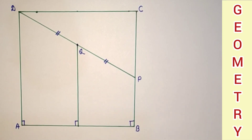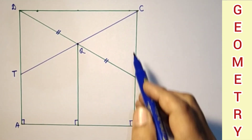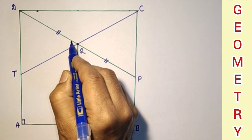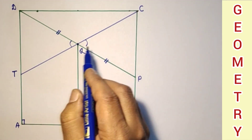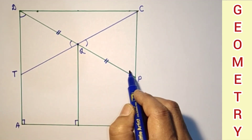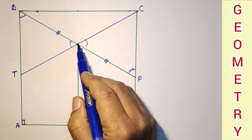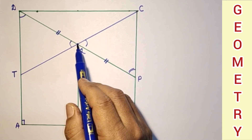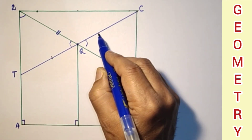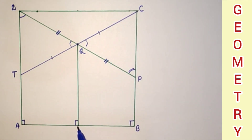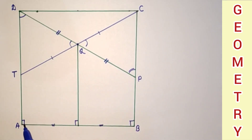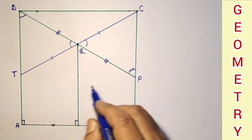If we do it in another way — second method — if we extend CQ and let it intersect side AD at point T, then the diagram will look like this: the line is extended up to T. These two angles are equal as vertically opposite angles. This angle equals this angle. Q is the midpoint of DP as given, and Q will also be the midpoint, as already proved. These two trapeziums will also be congruent.